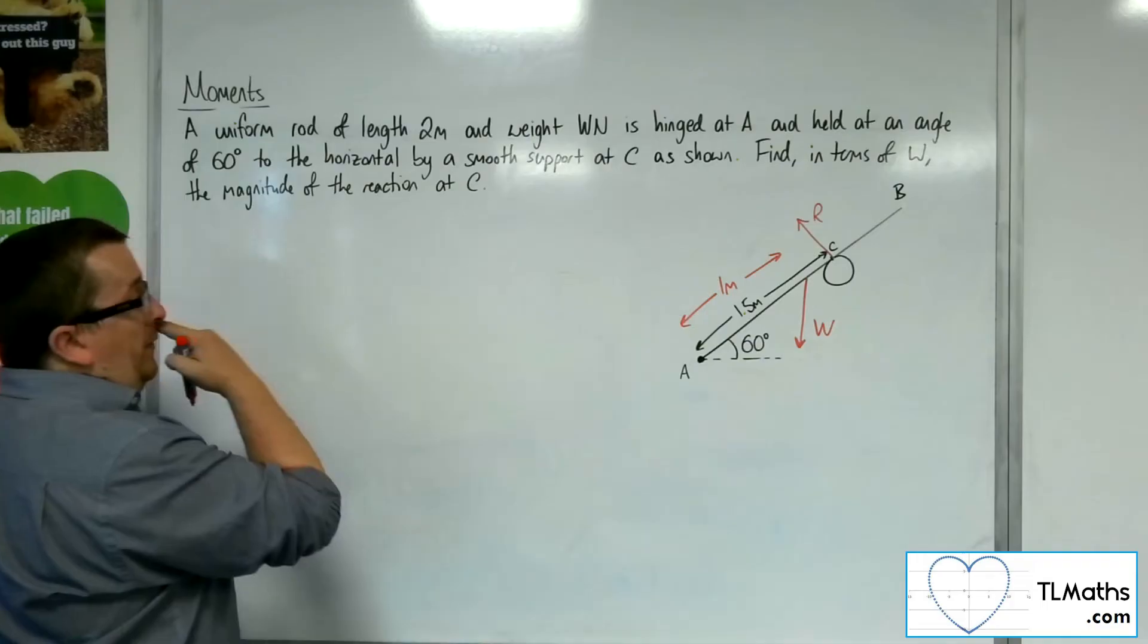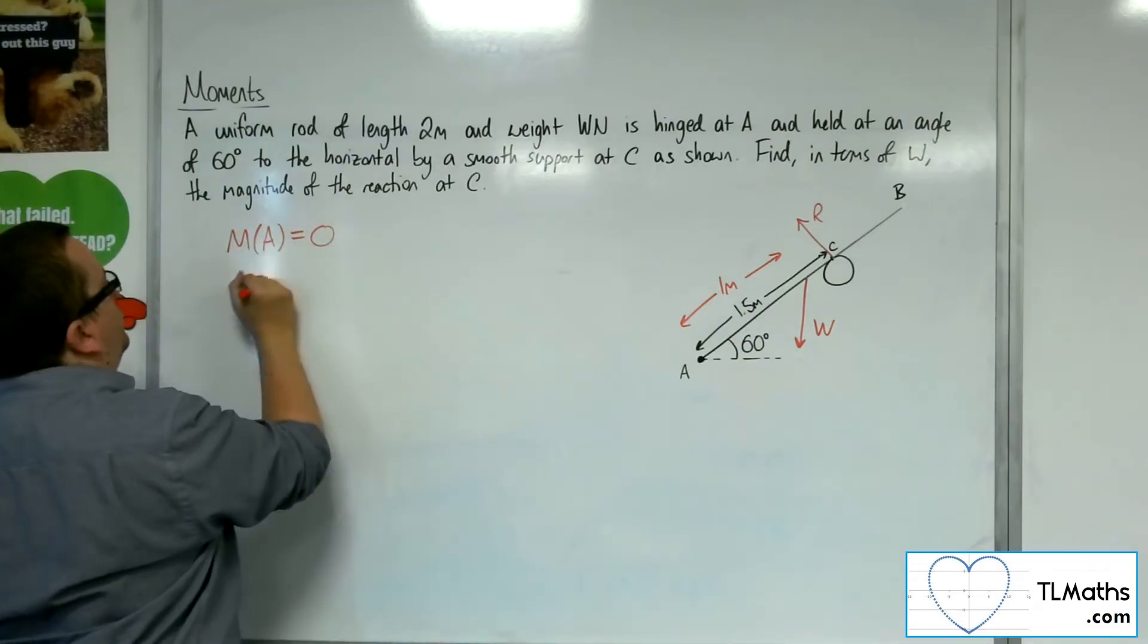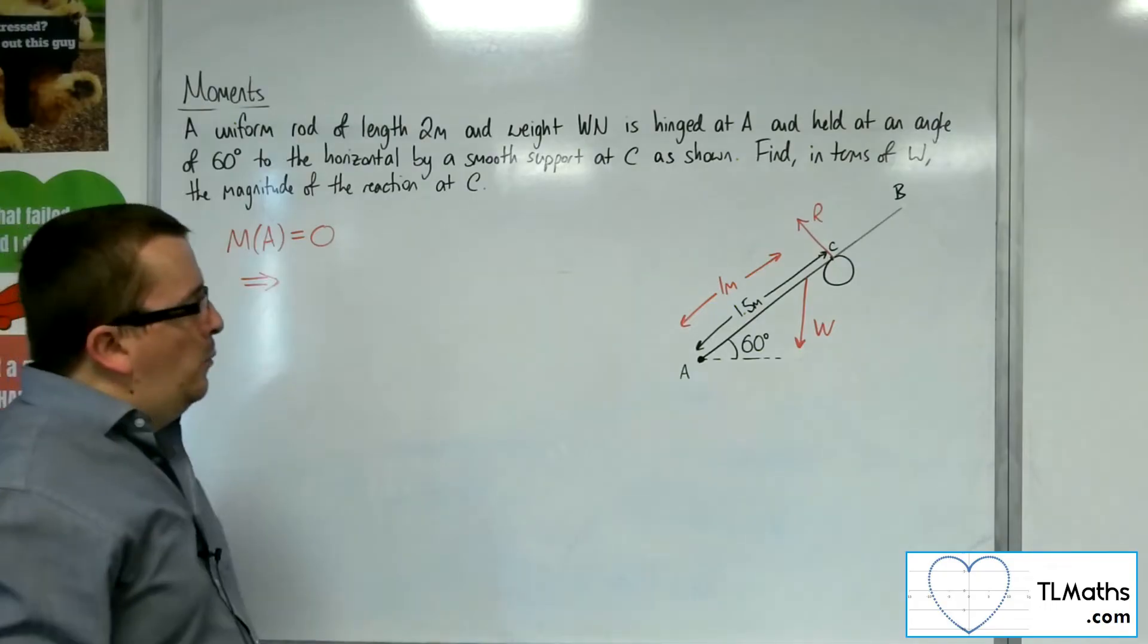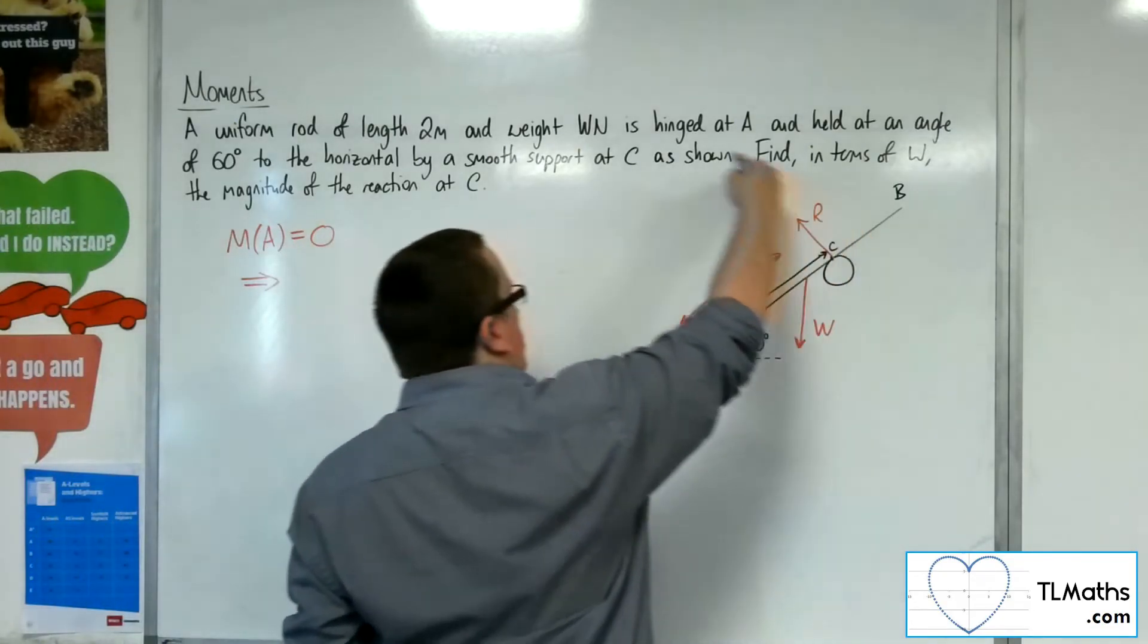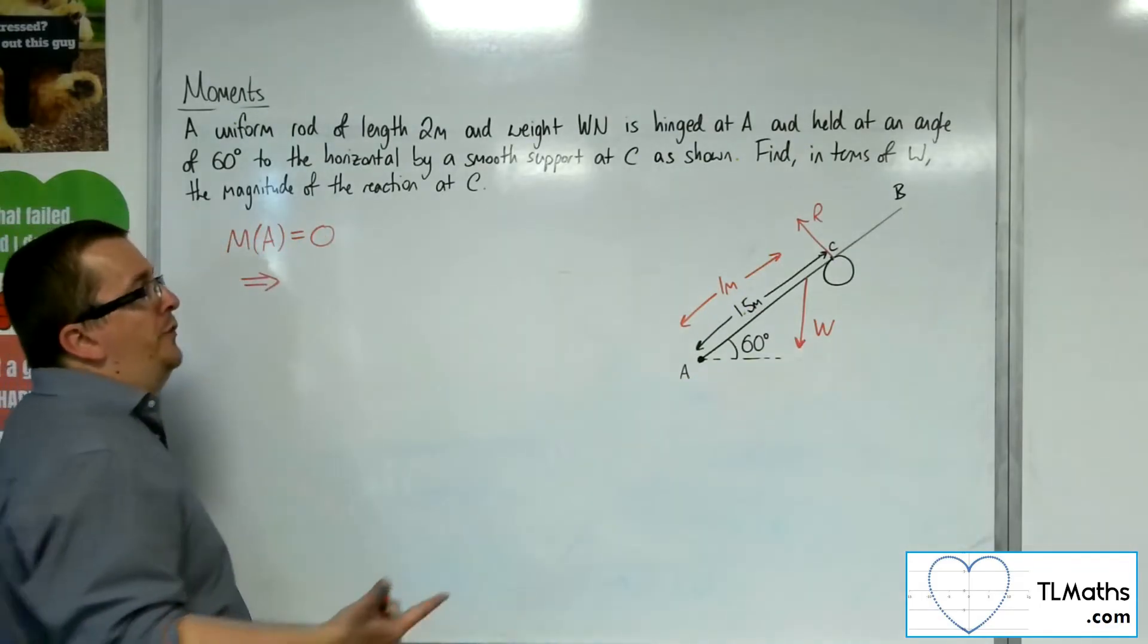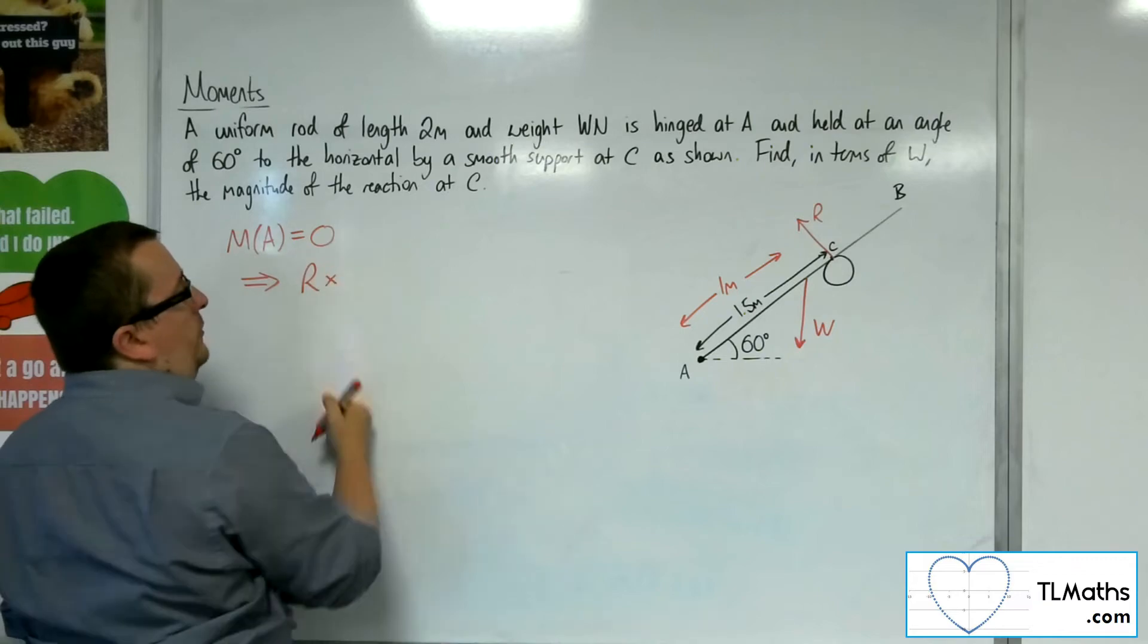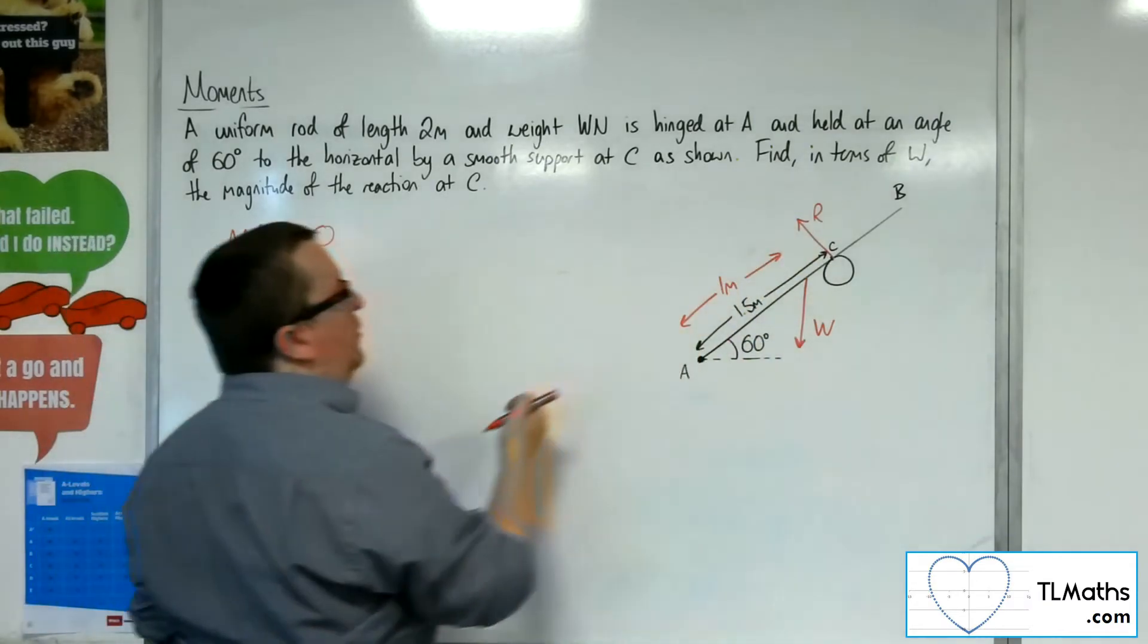So if I take moments about point A, then what have I got? Well, I've got this R, which is going around in that direction, so it's anticlockwise, so it's going to be positive. So we're going to have R times, well, the full distance is 1.5.